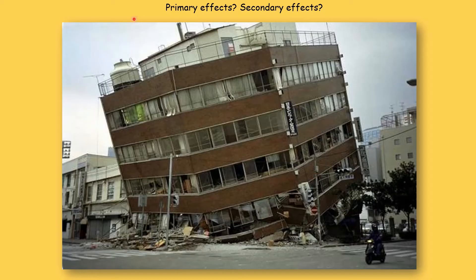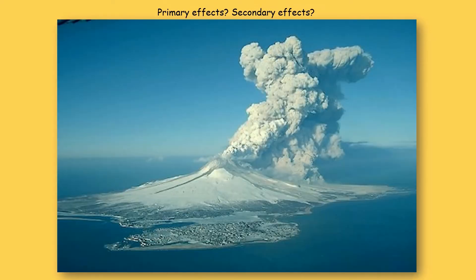In summary: the hazard is an earthquake, the primary effect is building collapse, and the secondary effect is people dying.